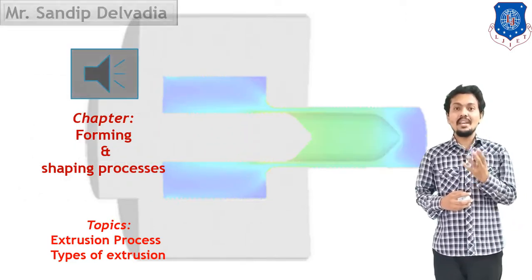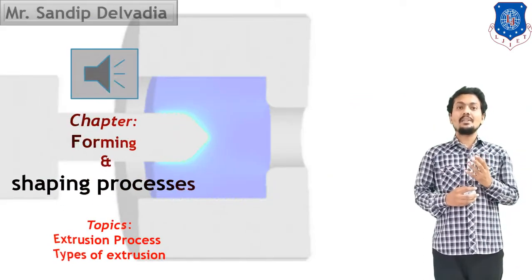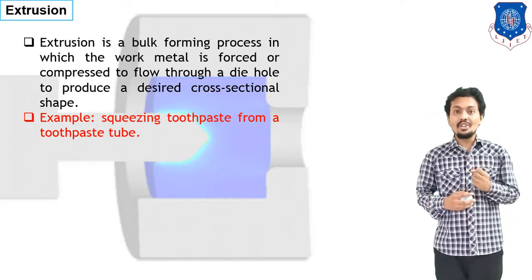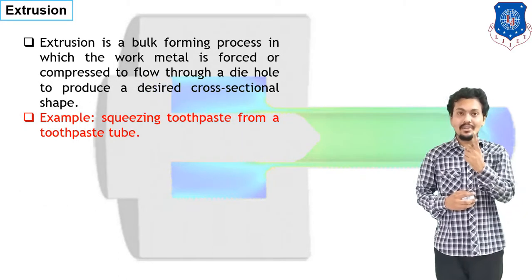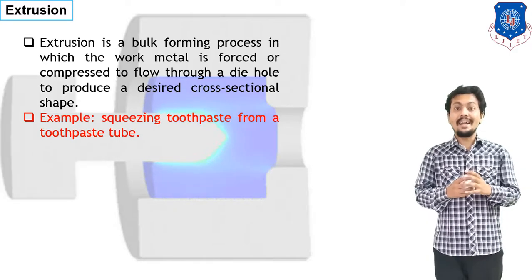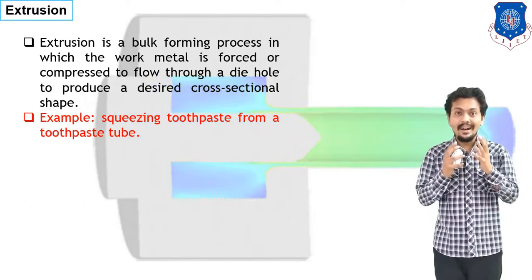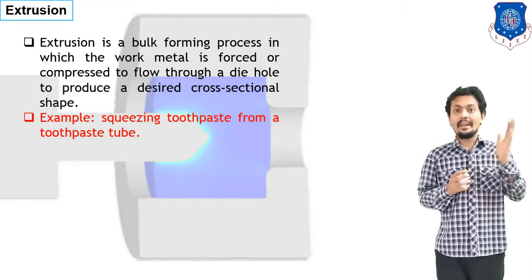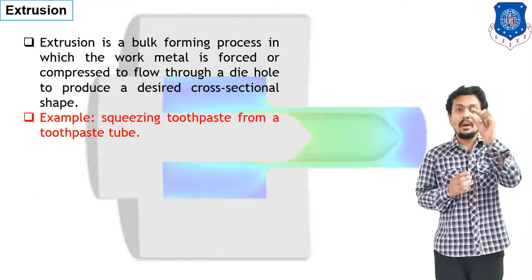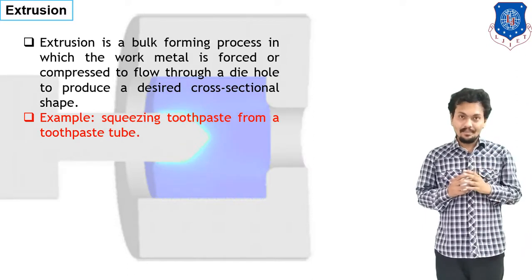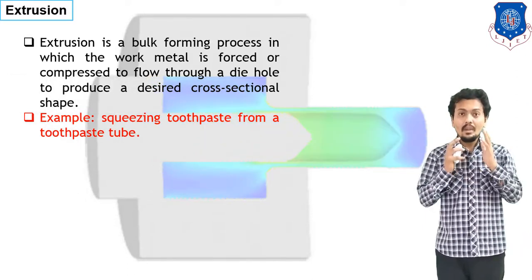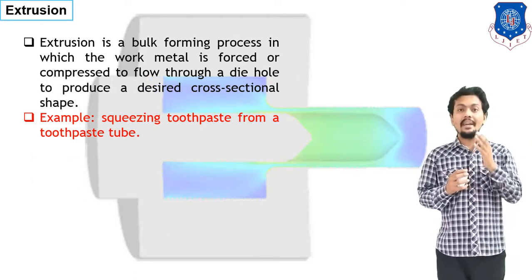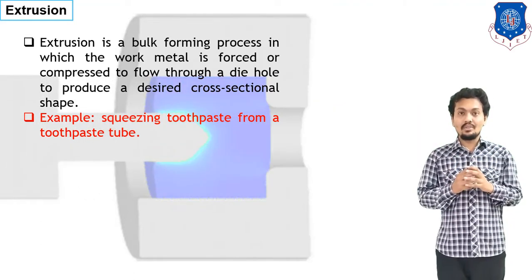Because shape will change in extrusion process, let us start our discussion on extrusion process under the category of forming and shaping. Here I have mentioned the important points regarding the extrusion process — that is the definition of extrusion process and how the extrusion process occurs. In extrusion process, our purpose is to make the material flow under application of force through a small diameter opening that is known as a die.